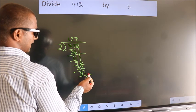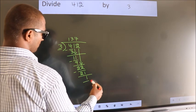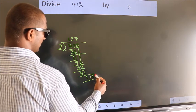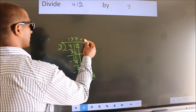No more numbers to bring it down, so we stop here. This is our remainder. This is our quotient.